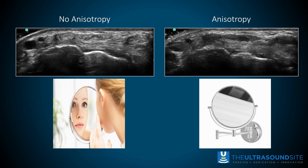You can see this nicely in the images shown. On the left, the probe is perpendicular to the tendon structures and they appear bright. On the right, the probe has been tilted slightly and the tendons become hypoechoic. Note that the connective tissue, fat, vascular structures, and bone have changed far less — demonstrating the relative sensitivity to angulation, which is really important to consider in musculoskeletal imaging.